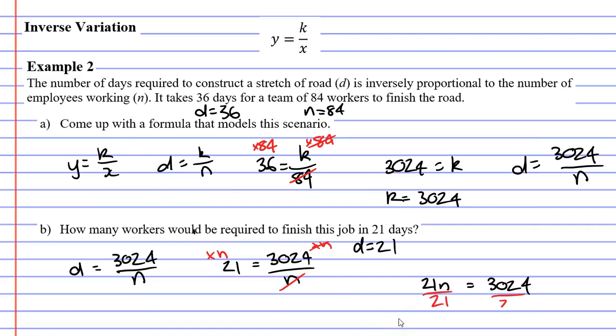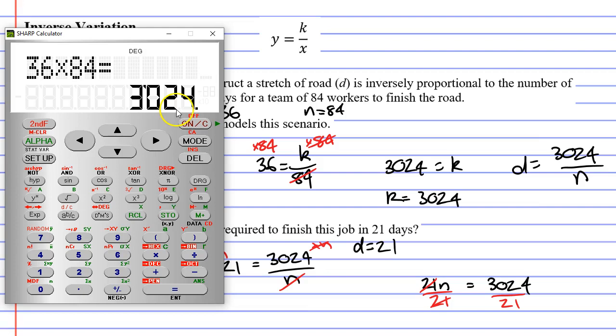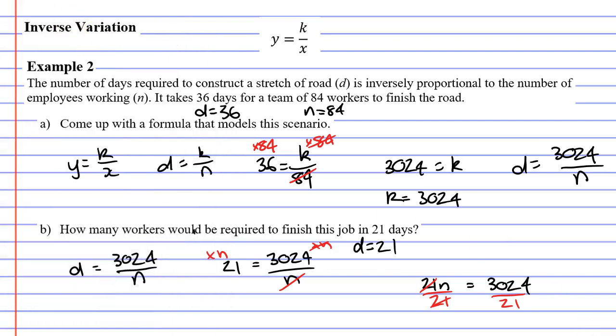Now, it's quite simple to solve this. We divide both sides by 21, cancelling the 21 next to the N. Bringing up our calculator, 3,024 divide 21 gives us 144, giving us N equal to 144. This means it would take 144 employees to finish this stretch of road in 21 days.